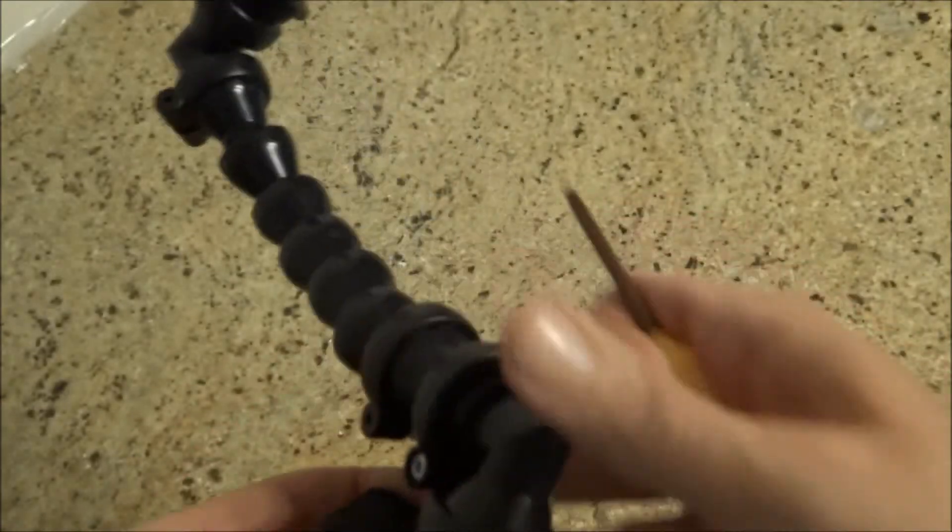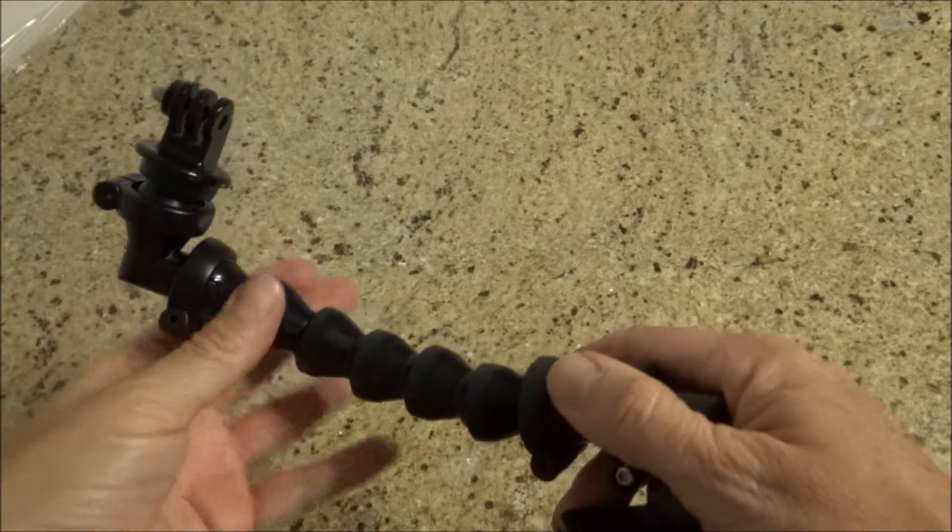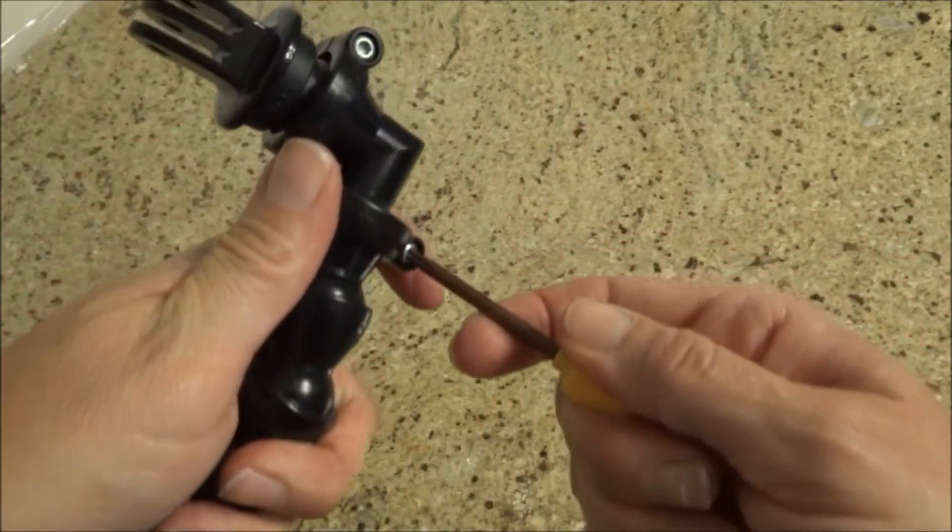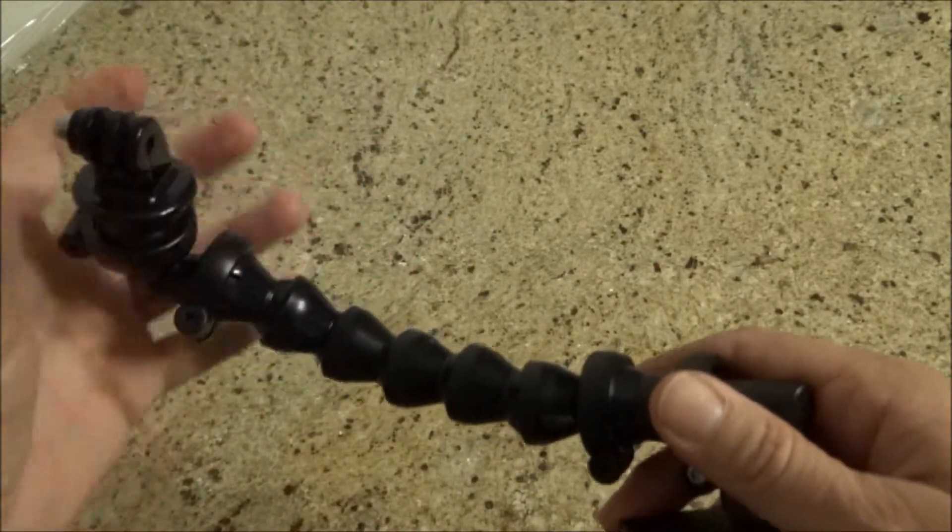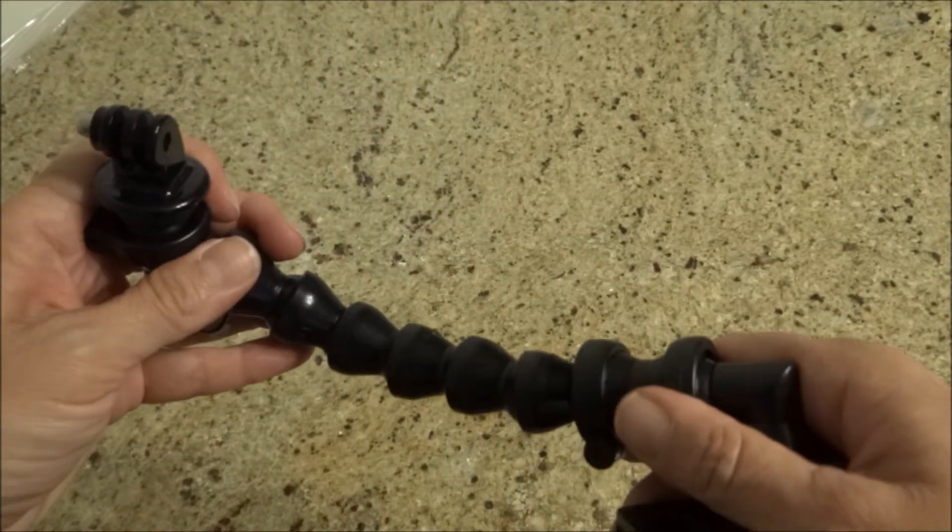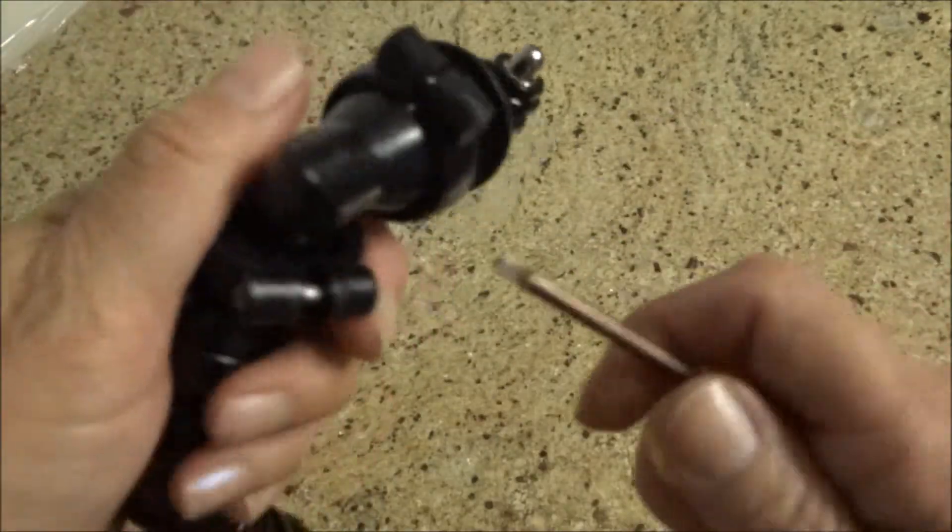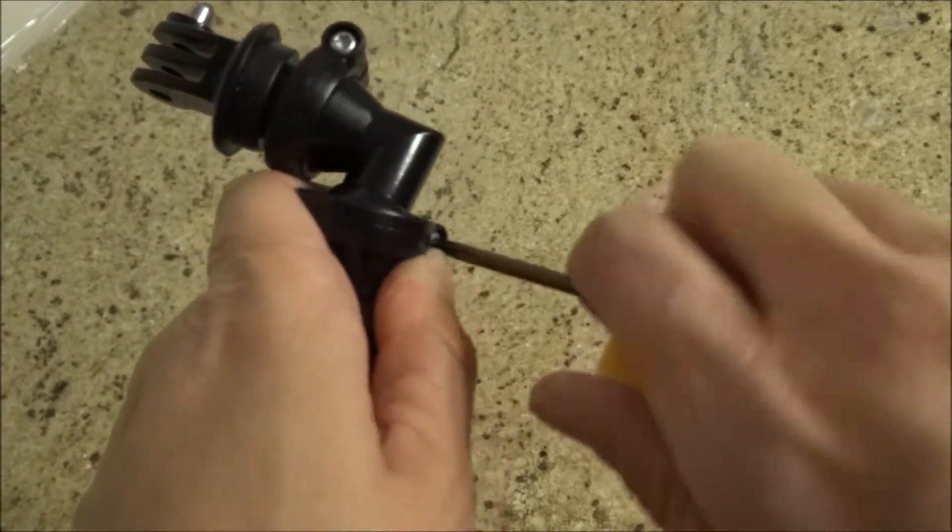So now the mount is pretty much ready to go, except I made that a little bit too tight and didn't check my angle, so you would just loosen this up and then rotate your GoPro angle up, which you can do after you have this installed. Then just tighten this back up.